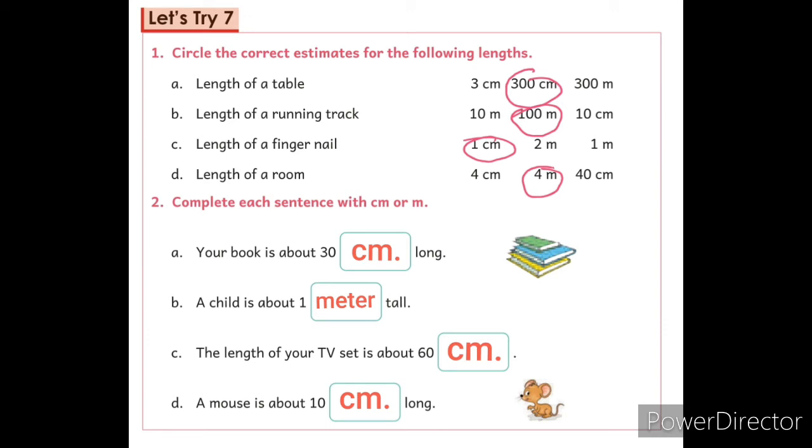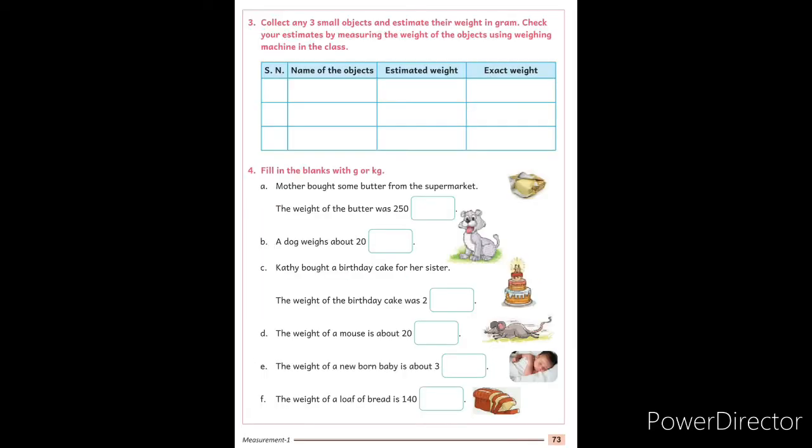Do also on your course book. Question number 3: Collect any 3 small objects and estimate their weight in gram. Check your estimates while measuring the weight of the objects using weighing machine in the class. Dear students, this is your homework question.